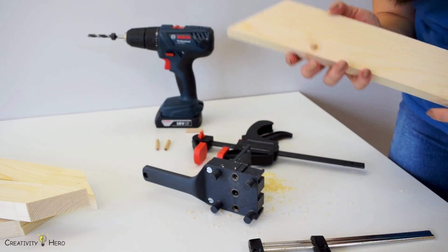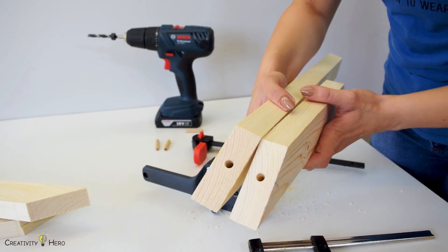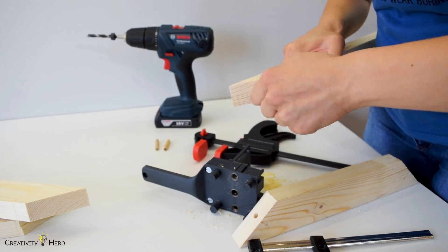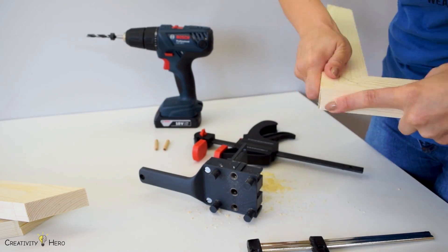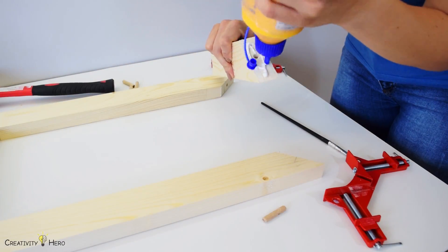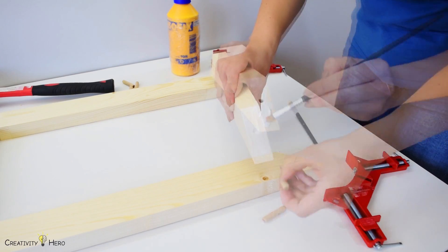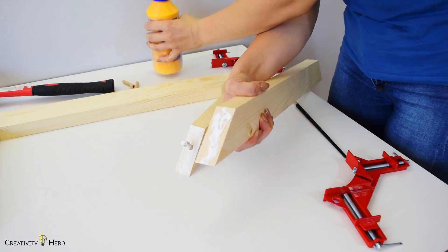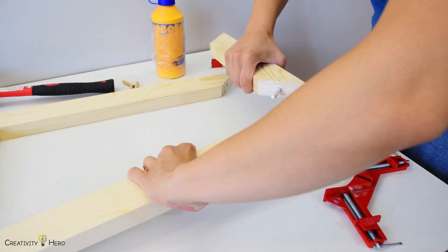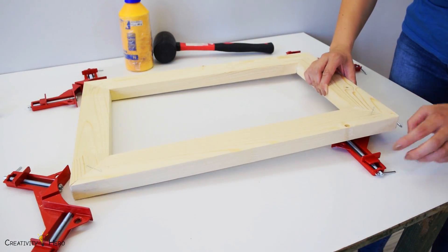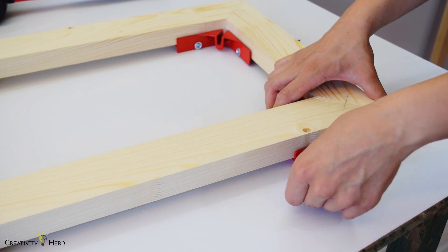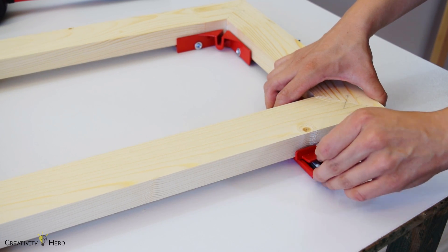I've put one dowel per corner because the chandelier weighs around 3 kilograms which is less than 7 pounds. I applied wood glue and joined the pieces together. Then I clamped down the frame with corner clamps and left it to dry out.